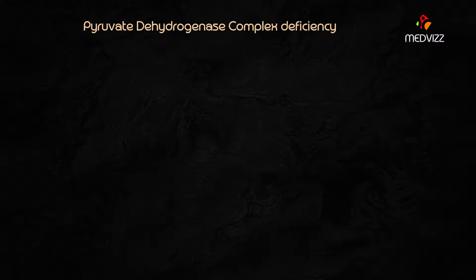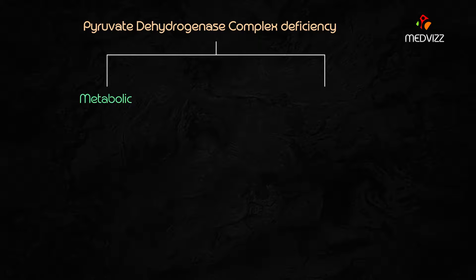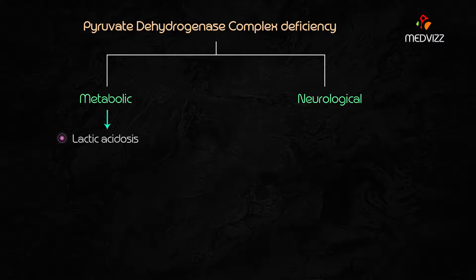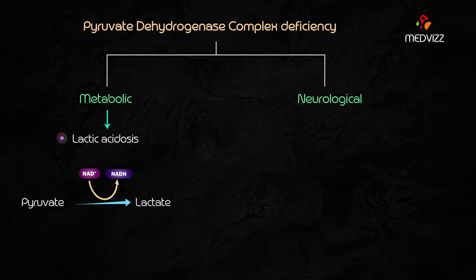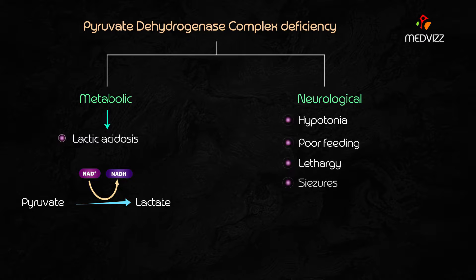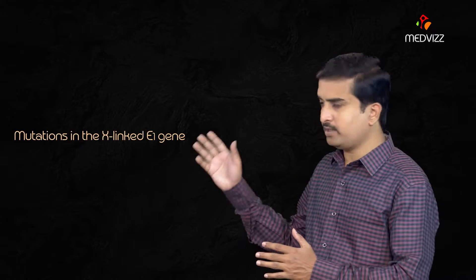Pyruvate dehydrogenase complex deficiency has two typical presentations: metabolic acidosis and neurological problems. The metabolic presentation is mainly lactic acidosis, because accumulated pyruvate is converted into lactate. Neurological features include hypotonia, poor feeding, lethargy, seizures, and mental retardation. The most common form is caused by mutations in the X-linked E1 gene.